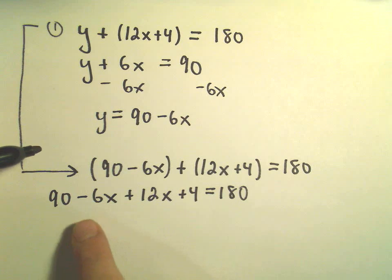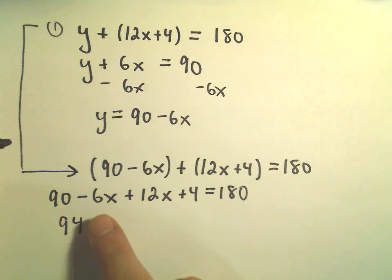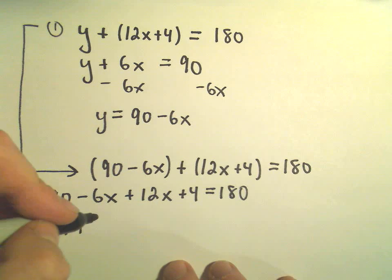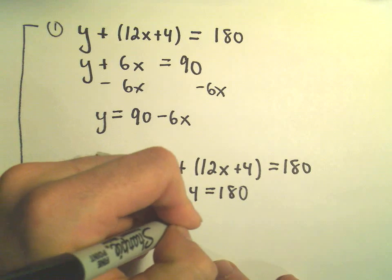And let's see, so we've got 90 plus 4 is going to give us 94, we have negative 6x plus 12x, so that will give us positive 6x, that equals 180.